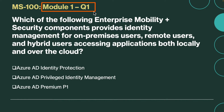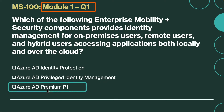Which of the following enterprise mobility plus security components provides identity management for on-premises users, remote users, and hybrid users assessing applications both locally and over the cloud? Is it Azure AD Identity Protection, Azure AD Privileged Identity Management, or Azure AD Premium P1? The correct answer is Azure AD Premium P1. Azure AD Premium P1 is an enterprise-level edition that provides identity management for on-premises users, remote users, and hybrid users assessing applications both locally and over the cloud.